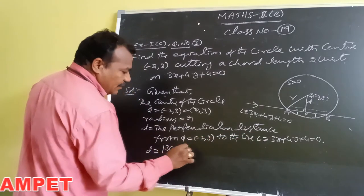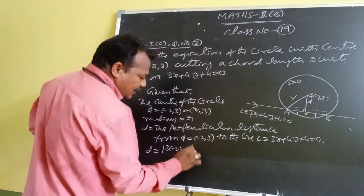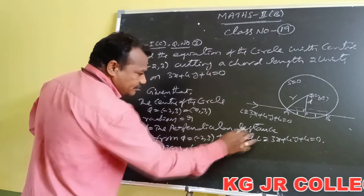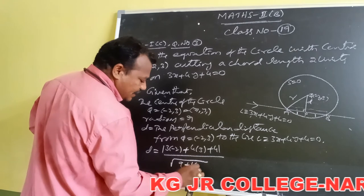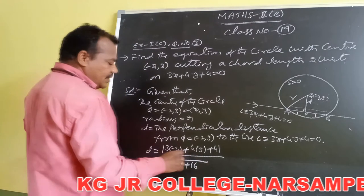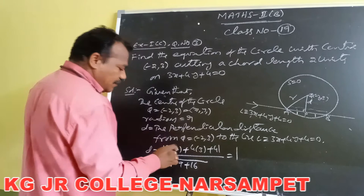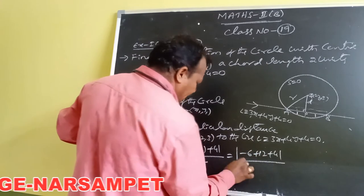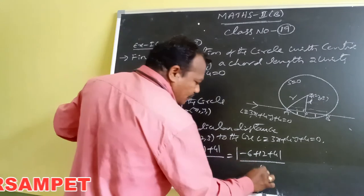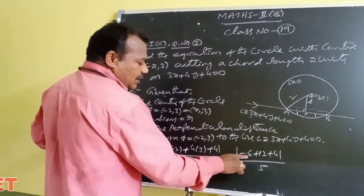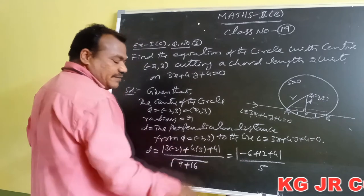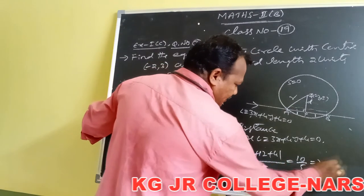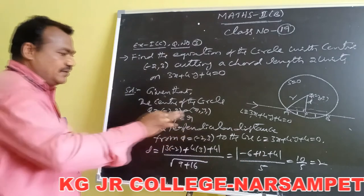Using the perpendicular distance formula: 3 of minus 2, plus 4 of 3, plus 4, by root of 9 plus 16. In simplification: modulus of minus 6 plus 12 plus 4, by root 25 equals 5. That gives 12 plus 4 equals 16, 16 minus 6 equals 10, and 10 by 5 equals 2. So d equals 2.